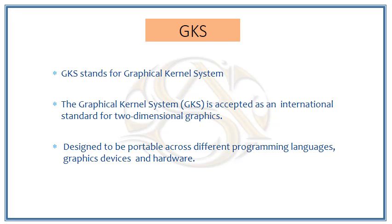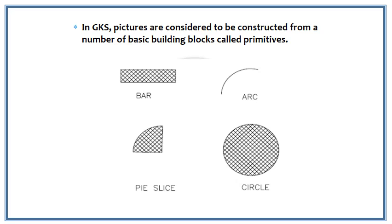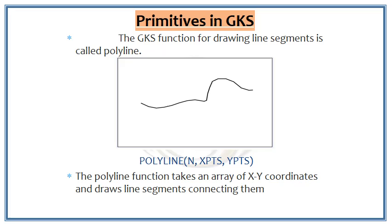GKS is widely accepted as the international standard for two-dimensional graphics and is designed to be portable across different programming languages and graphics hardware. In GKS, pictures are constructed from basic building blocks called primitives. Available primitives include bar, arc, circle, and pie or slice shapes.